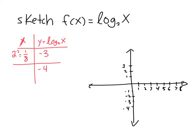If I plug in negative 2 for y — remember, logs are exponents — so log base 2 of x equals negative 2 means 2 to the negative 2 power is x, which is 1/4. Continuing: negative 1 gives 2 to the negative 1, which is 1/2.